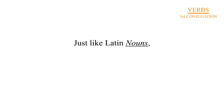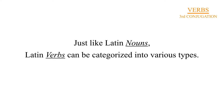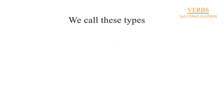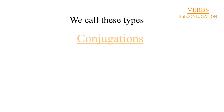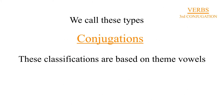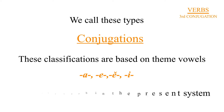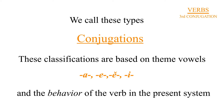Just like nouns, Latin verbs can be categorized into various types. We call these types conjugations. These classifications are based on theme vowels: A, E, short E, and I, and the behavior of the verbs in the present system.